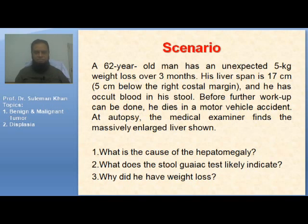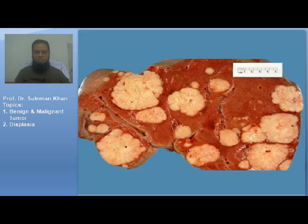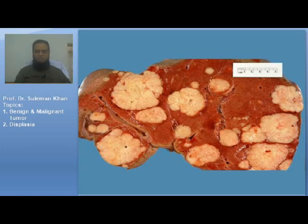Questions are usually: What is the color of hepatomegaly? What does the student's white test likely indicate? Why did he have weight loss? Look at the image — multiple masses are shown here. These are lesions in the liver. The brownish background is the liver tissue, and the pale whitish masses are scattered throughout the liver.